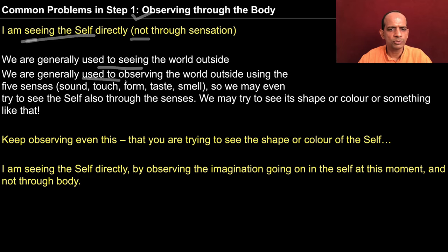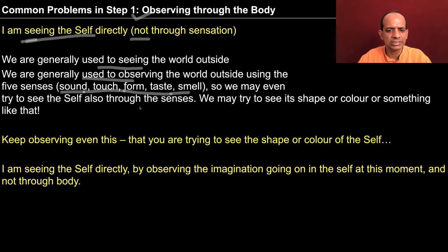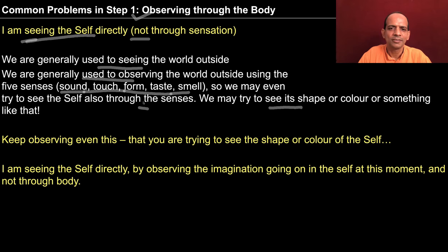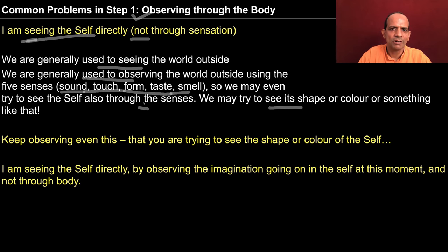Since we are accustomed to look at the world outside through the body using the five senses of sound, touch, form, taste, and smell, we may try to see the self also through the senses — to see its shape or color. Since we are used to looking at physiochemical objects which have a color, maybe we also try to look at the color of the self. But the self is not physiochemical; it is a conscious entity.